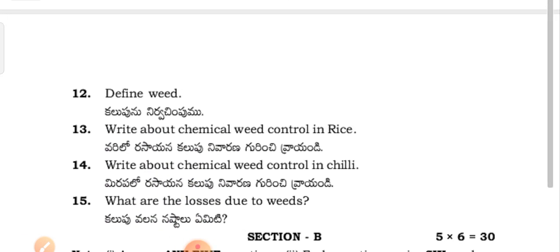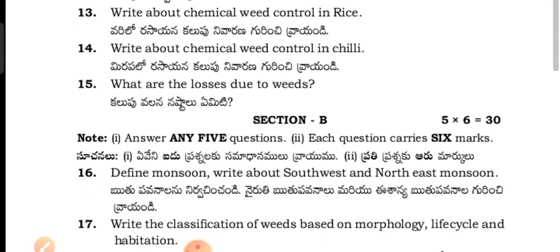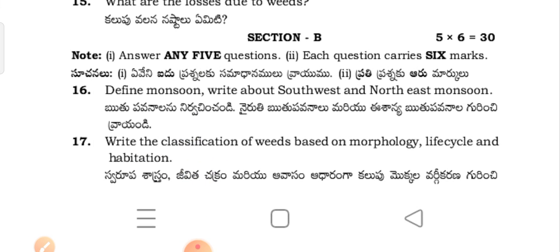Write about chemical weed control in rice — Varilos rasayana kalupu nirvachin channdi. Write about chemical weed control in chilli — Miripula rasayani kalupu nirvachin channdi. What are the losses due to weeds — Kalupu vallana nastolium.